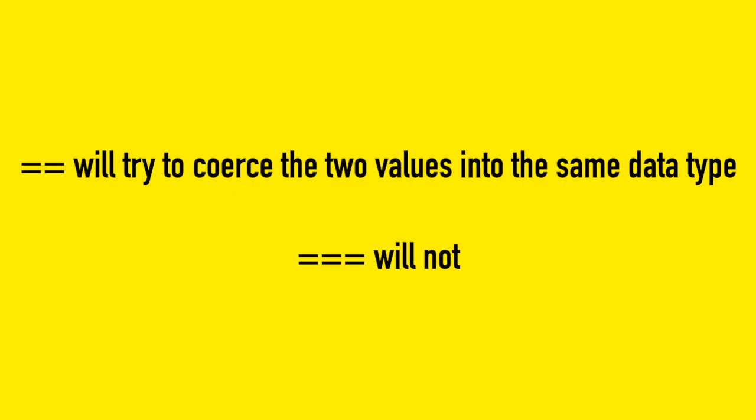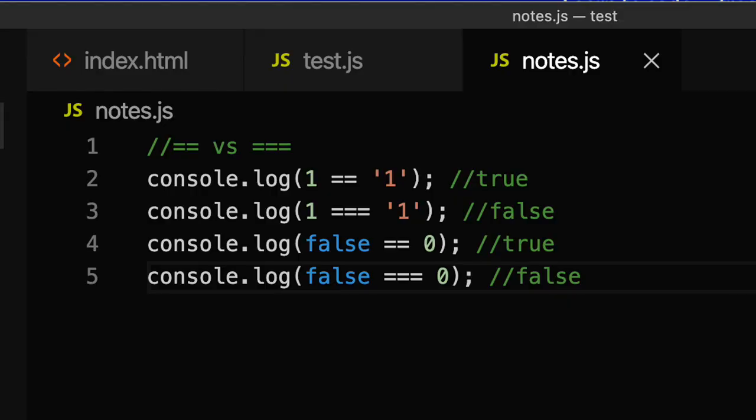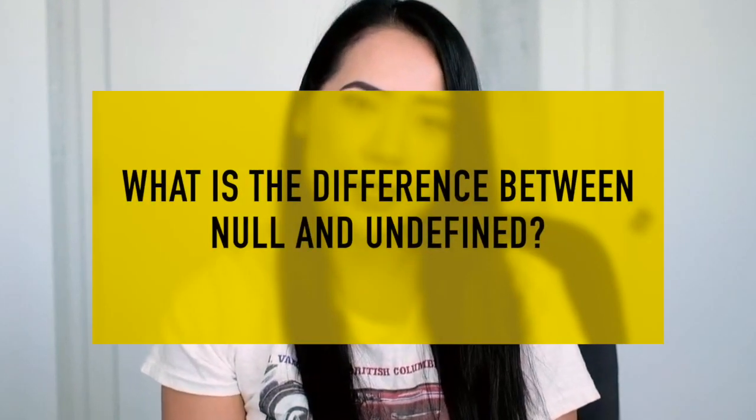Number three: what is the difference between the double equals operator and the triple equals operator? The double equals operator will try to coerce the two values being compared into the same type if they're not. The triple equals operator will not do any sort of type coercion. That means if the two values being compared are not of the same data type, it will always be false. The double equals operator can sometimes lead to unexpected results, so try to use the triple equals operator whenever you can.